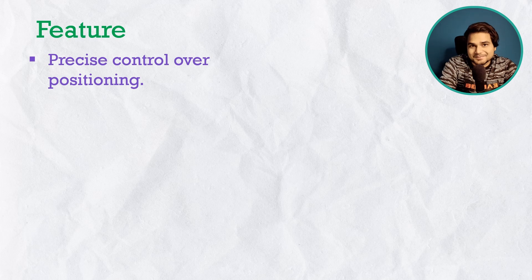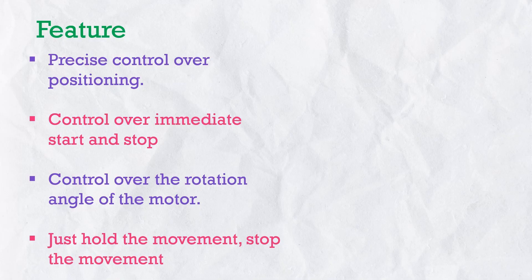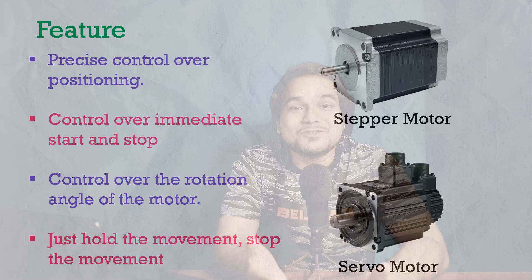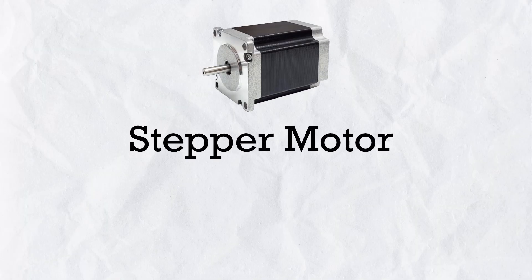But what if we need not only precise speed, but also precise positioning control, immediate start and stop, and sometimes holding in position? For this, there are two types of motors: the stepper motor and the servo motor. These two operate differently from other motors — they run on electrical pulses from a drive, PLC, or microcontroller. Apart from pulse signals, they also need AC or DC power supply, and cannot be operated without a driver or microcontroller.